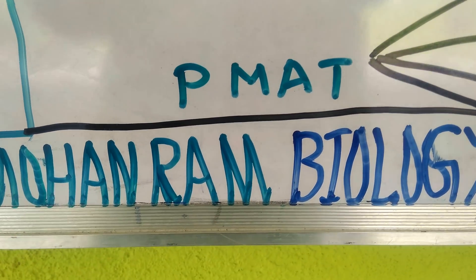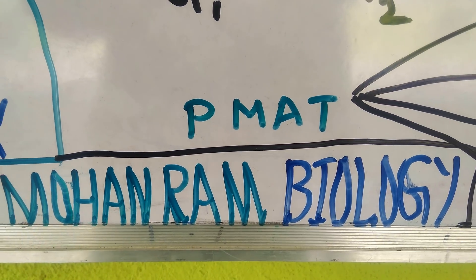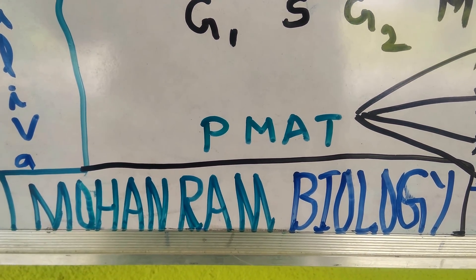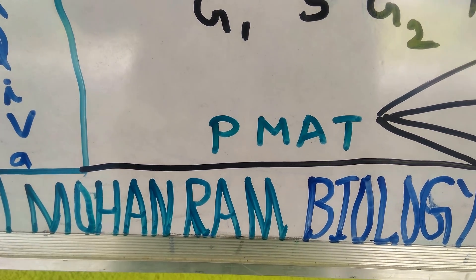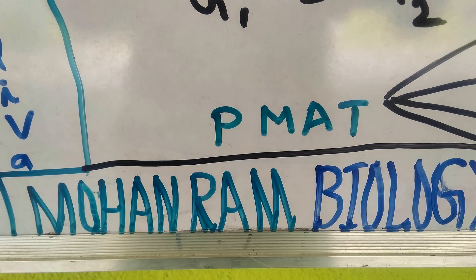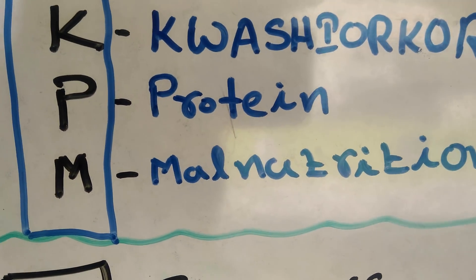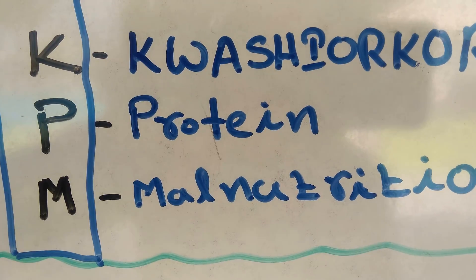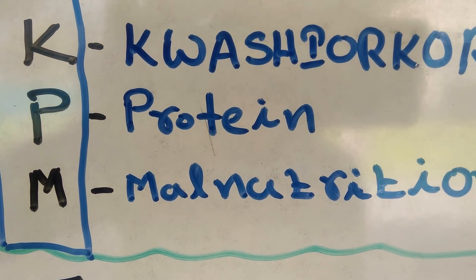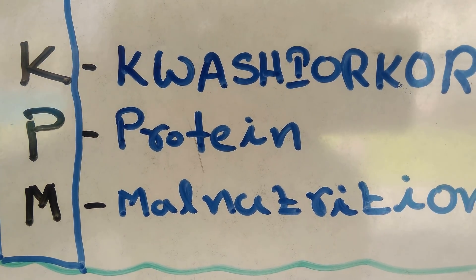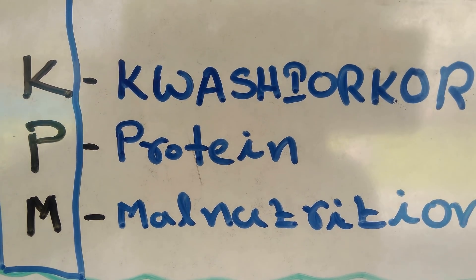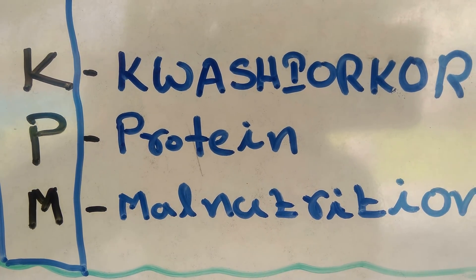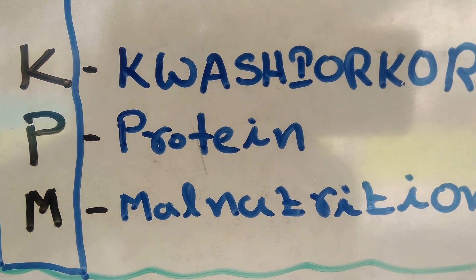Hi everybody, welcome to Mohanram Biology. Today we are going to discuss the most important shortcuts which make biology very easy to remember. The first one: the code for remembering Kwashiorkor is KPM — K for Kwashiorkor, P for proteins, M for malnutrition. So Kwashiorkor is due to deficiency of protein malnutrition, and the code is KPM.